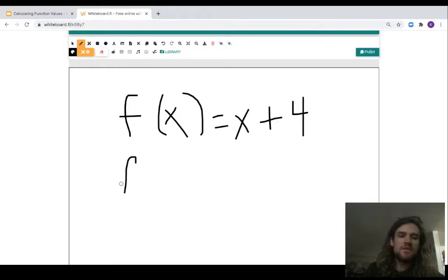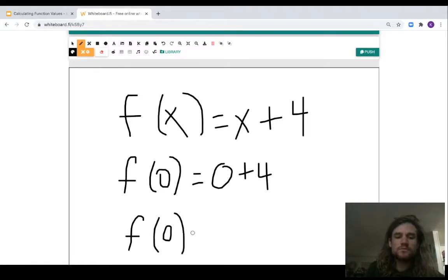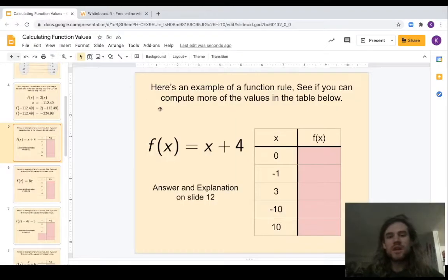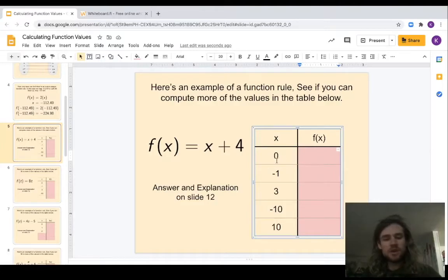So we're going to write it like this: f of zero equals zero plus four. Now it's not too hard to add zero and four together, so we would write this f of zero equals four. When we have a function x value of zero, our function output value equals four.